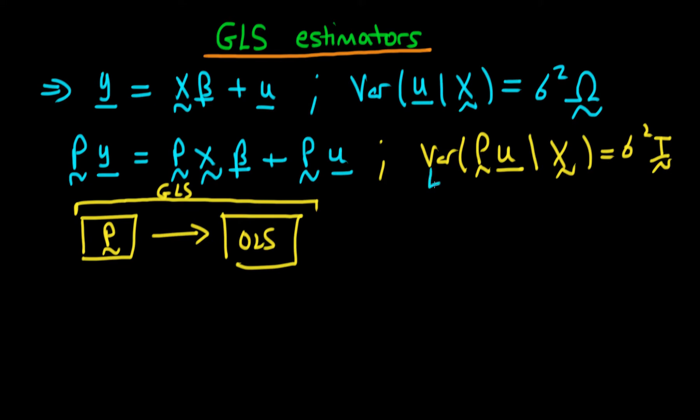Well, what we want is that the variance of Pu, in other words our transformed error, this thing here, should be equal to let's say sigma squared times the identity matrix I. So what we can do is we can actually expand the variance of P times u given X.